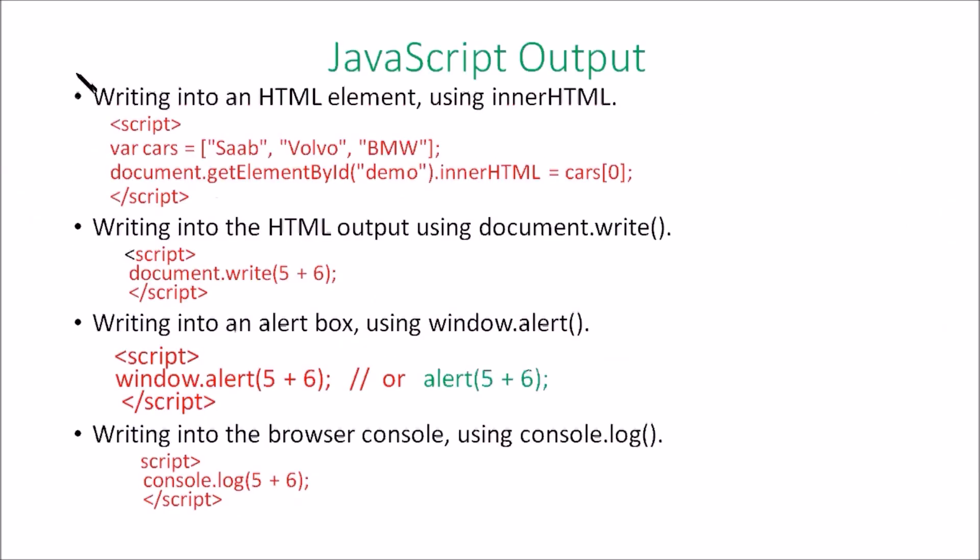Regarding the output, or how JavaScript is used for printing output on a screen, mainly four methods are available. First, by using getElementById method, or you can use document.write method, or you can use an alert box using window.alert, and another method is using console.log. Console.log is usually used by debuggers, while the other three methods are usually used by us.